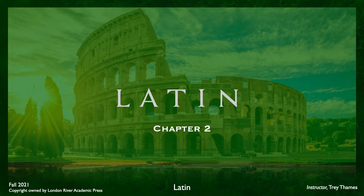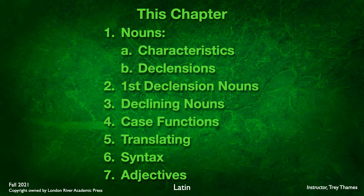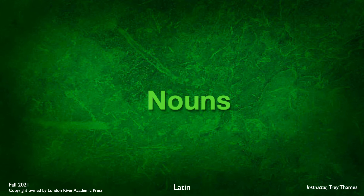This is Wheelock's Chapter 2. In this chapter we're going to be looking at nouns and their characteristics. We'll be introducing you to the idea of noun declensions. We'll talk about case functions and how nouns function within sentence constructs, and we'll talk about how we translate these nouns and Latin syntax. We'll also at the very end talk about adjectives and how they relate to nouns.